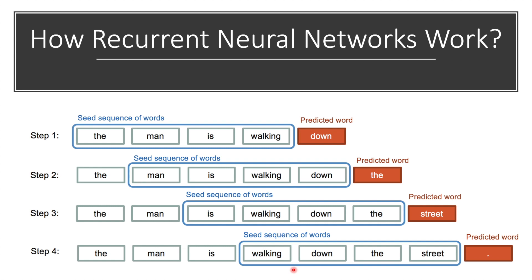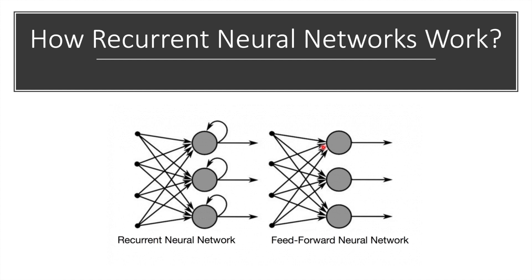Simply put, recurrent neural networks add the immediate past to the present. RNNs and feed-forward neural networks get their names from the way they channel information. In a feed-forward neural network, information only moves in one direction — from the input layer through the hidden layer to the output layer — and never touches a node twice. That is why feed-forward neural networks have no memory of the input they received and are bad at predicting what is coming next, as they only consider the current input and have no notion of order in time.